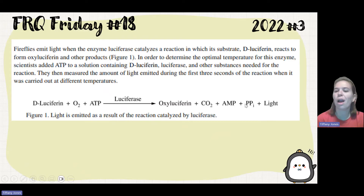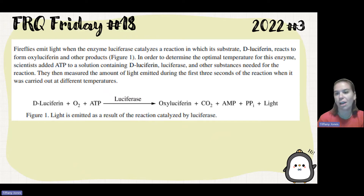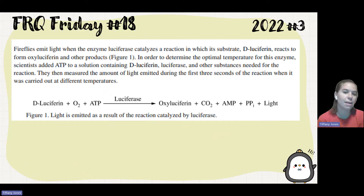In order to determine the optimal temperature for this enzyme, scientists add ATP to a solution containing luciferin, luciferase, and other substances needed for the reaction. They measured the amount of light emitted during the first three seconds when it was carried out at different temperatures.